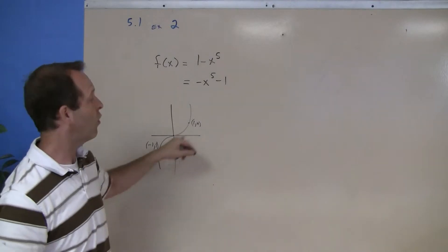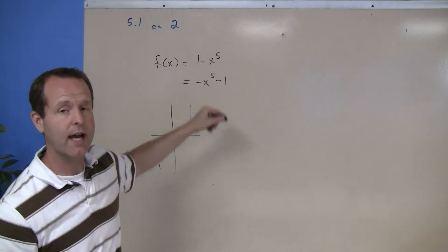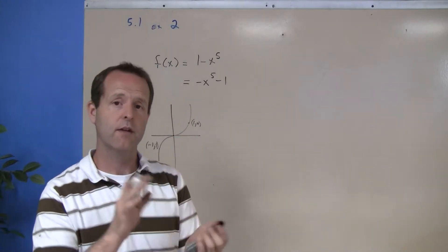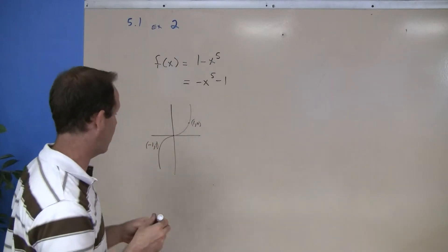When I transform, I do the x first. Now I have this negative. The negative outside of that x to the fifth reverses or mirrors the graph around.